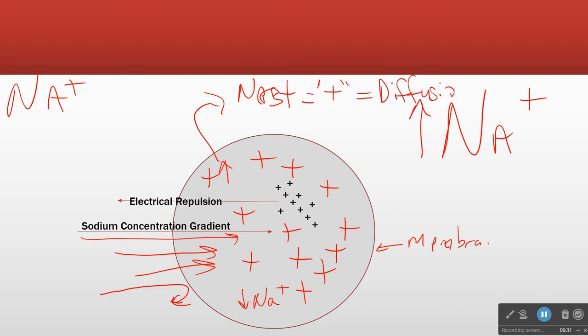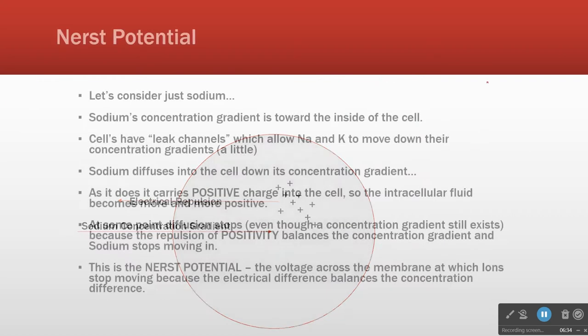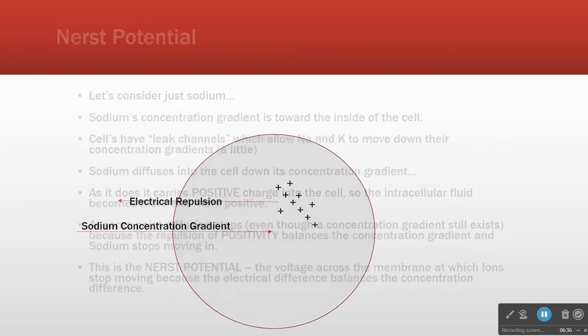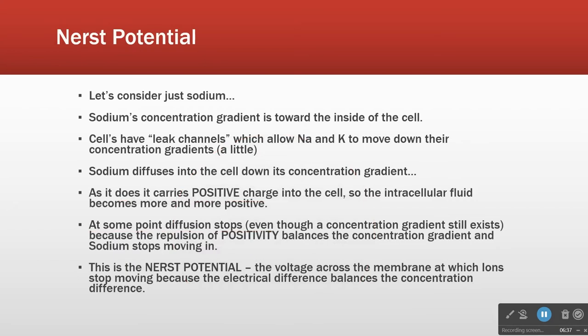So the Nernst potential is the electrical — it's the amount of positive that exactly balances the diffusion force. Sodium diffuses down its concentration gradient, carries a positive charge, and at some point that positivity balances. That's the Nernst potential. It's a voltage.